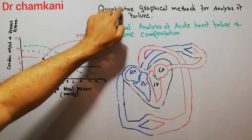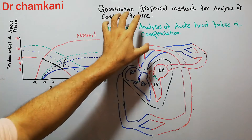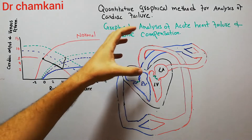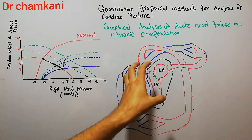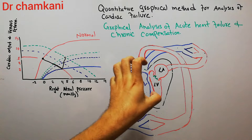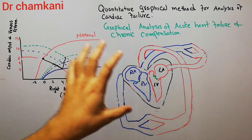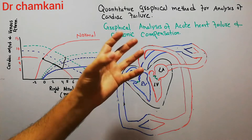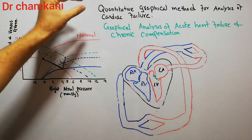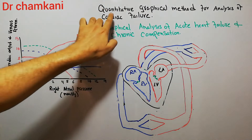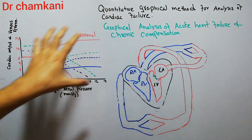Today we are going to start the quantitative graphical method for analysis of cardiac failure. In simple words, cardiac failure occurs when the heart is unable to pump enough blood to satisfy the needs of the body. This condition, when presented with the help of a graph and exactly quantified, is known as the quantitative graphical method for analysis of cardiac failure.